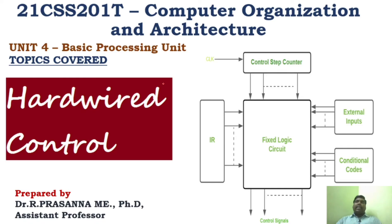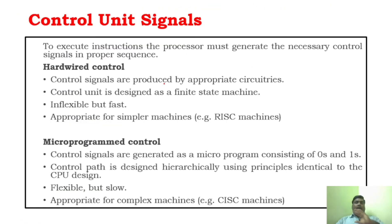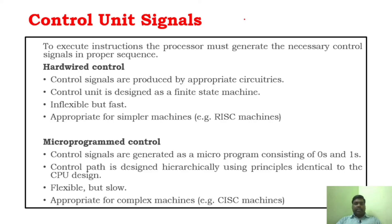Before going to this topic, you want to understand what is meant by Hardwired Control of the Processor. So far in Unit 4, we are seeing how the processor works — the fundamental concepts of the processor — how the content is transferred from one register to the other register, and how the instruction execution is taking place. First it is fetched from the memory, and then that particular instruction is executed in the processor.